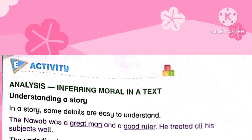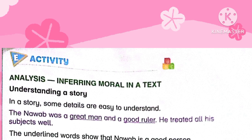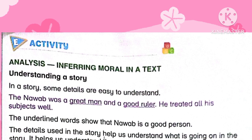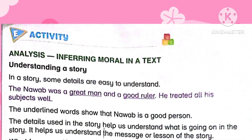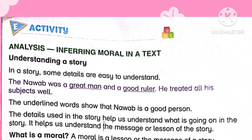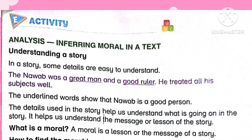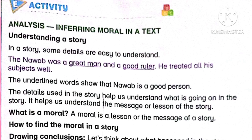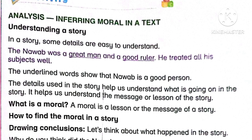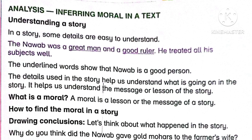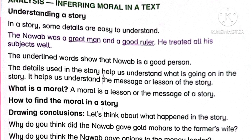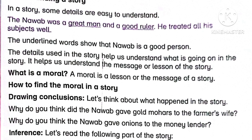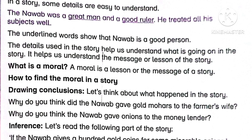The next section is Section E: Activity. The focus is on inferring the moral in a text. Some details are easy to understand — for example, 'The Nawab was a great man and a good ruler — he treated all his subjects well.' The underlined words show that the Nawab is a good person. The details used in the story help us understand what is going on.